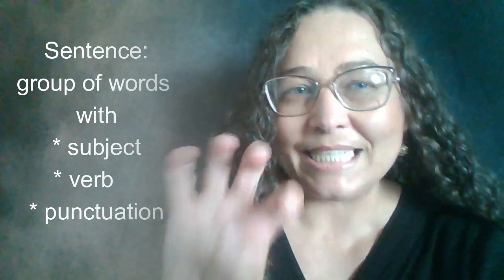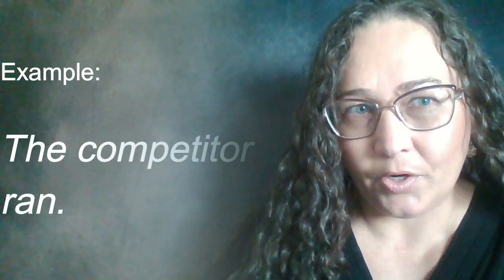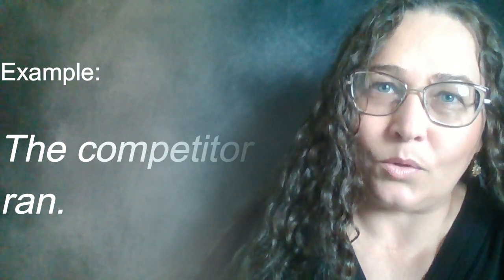So, what is a sentence? A sentence is a group of words that uses a subject, a verb, and a punctuation sign to express a complete thought. Form a simple sentence by using a complete subject and a complete verb. Let us look at one example: the competitor ran. Competitor is the subject, ran is our verb, and obviously the sentence ends with a punctuation sign.